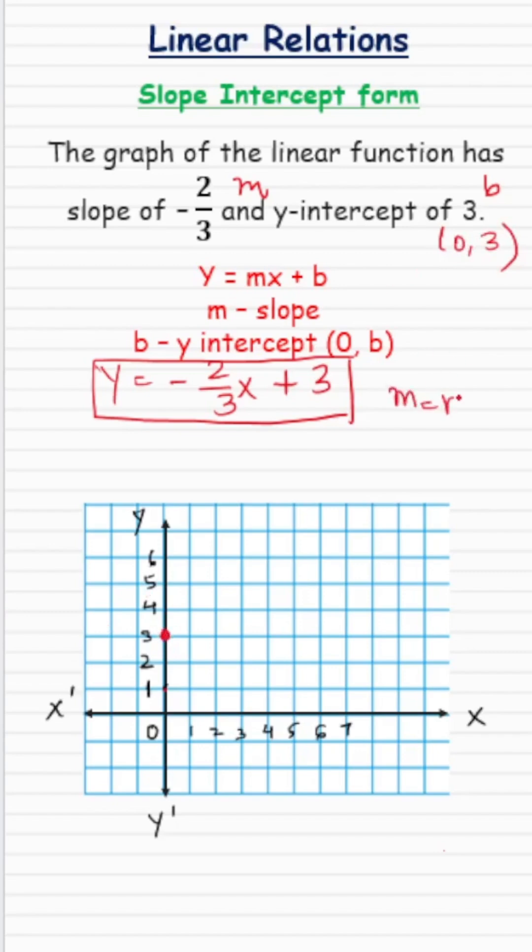Now the slope is always given by the formula of rise over run, and in this case m is equal to negative 2 over 3. Minus means we will go down. The line is going towards downwards direction and the rise is negative 2.